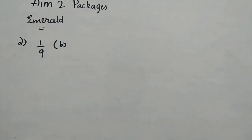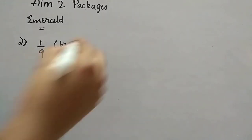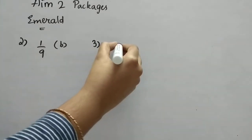Third question: tan² 60° + 4 cos² 45° + 3 sec² 30° + 5 cos² 90°. We substitute standard values in each term and find the result. The answer is option C.